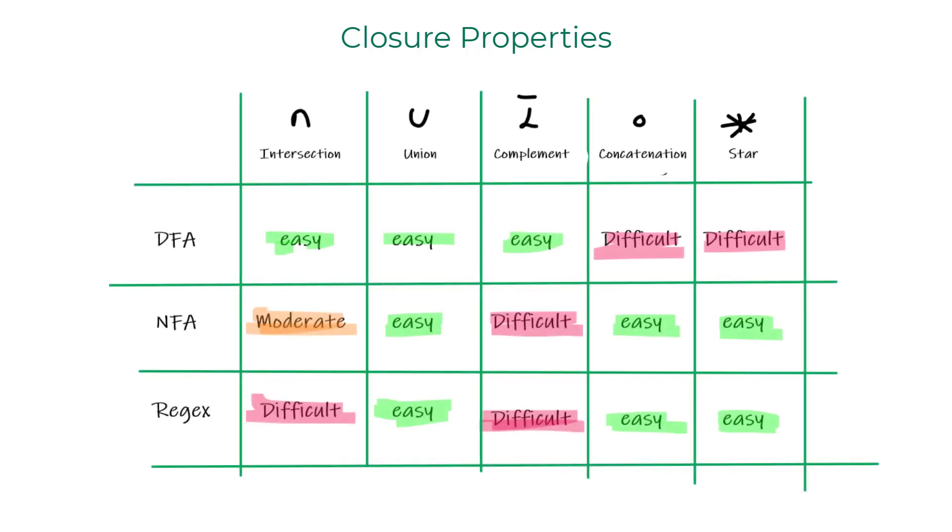Let us also spend some time reviewing few key closure properties of all the three entities. To find intersection and union languages of two DFAs, we had to build a product automaton. For complement, we just had to flip the accept states to non-accept states and vice versa.